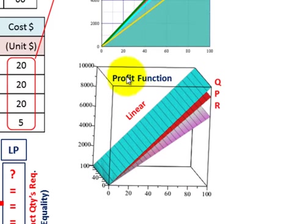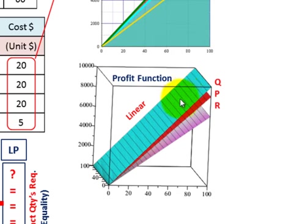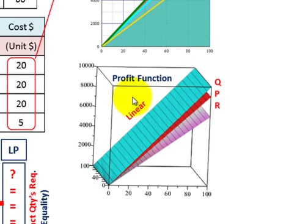If we expand to a 3D graph, we get pretty much the same thing. It's a linear relationship for our profit function. Q would be the light blue 3D profit curve, P would be the red one, and R is the one below. That gives you a better understanding of the linear relationship we're looking at for profit.